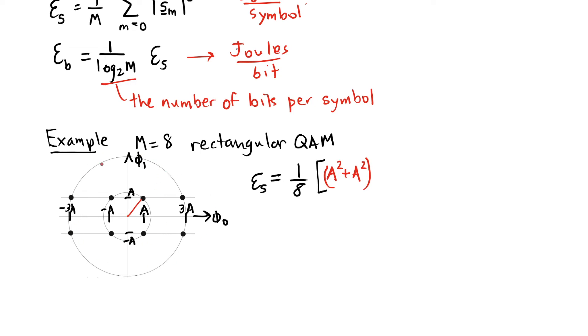I'm going to say that all of these four points on the inside of this constellation are the same distance from the origin. So instead of doing 2a squared plus 2a squared plus 2a squared plus 2a squared, I'm going to multiply this by 4, and then I'm going to move on to the other symbol points that are at some other distance.